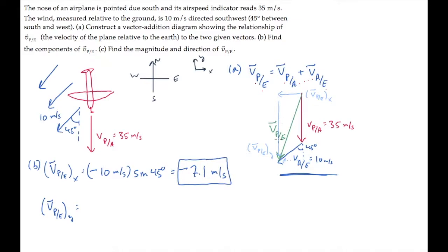In the same way, the y component is found by adding up the y components of the two vectors. They're both in the negative direction. So we get negative 35 meters per second, minus 10 meters per second, cosine 45. And that gives minus 42 meters per second.